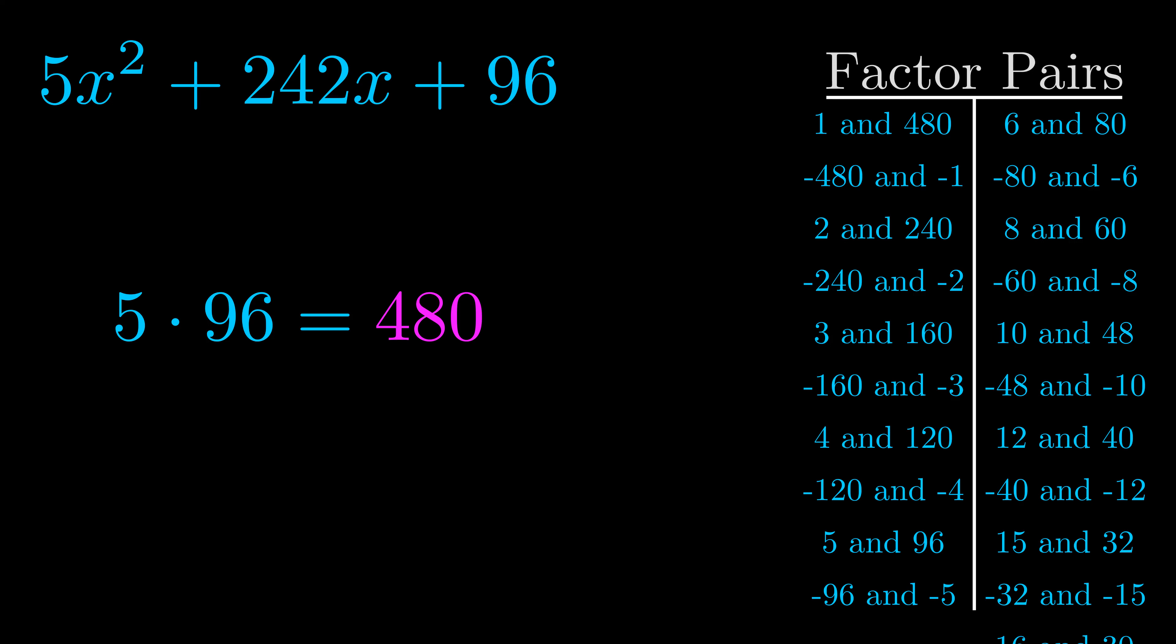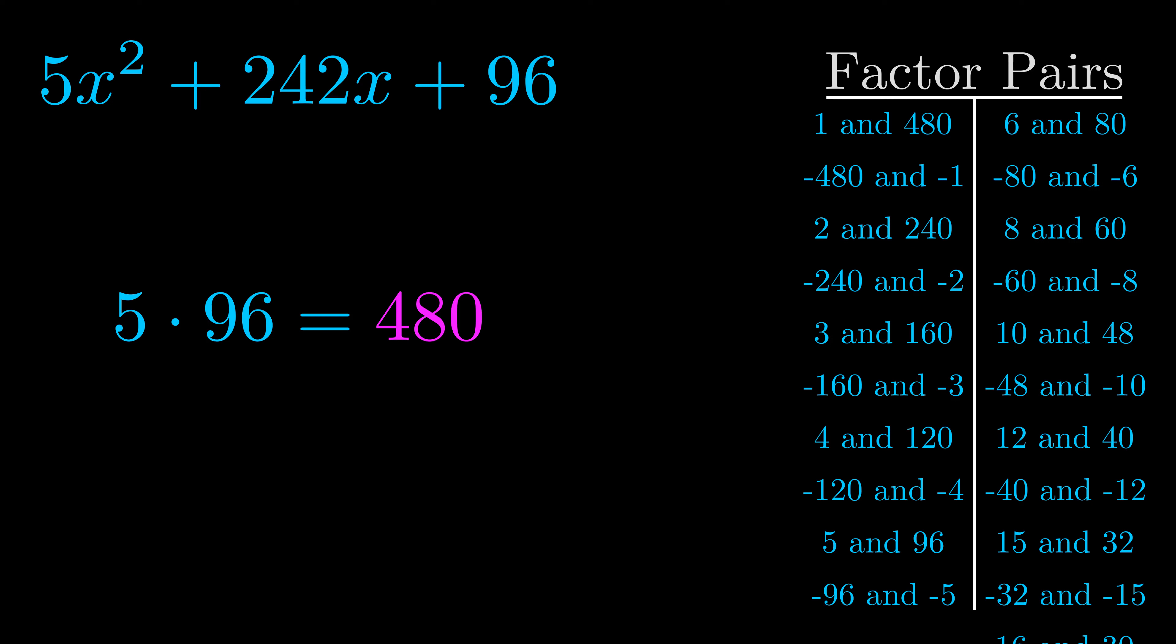Now once you have these factor pairs, the goal is to find which of these pairs adds to the b value. The b value is the coefficient on the x term. That's the middle term, the one that we haven't done anything with yet. And really this is the only factor pair that we need.